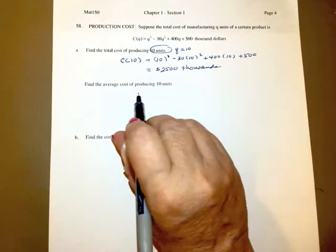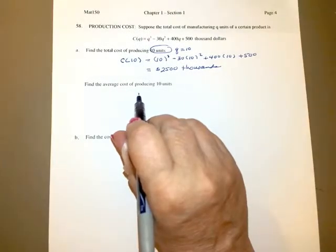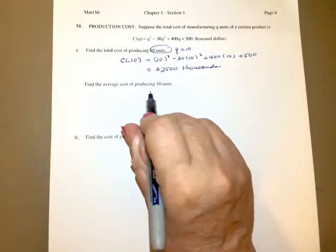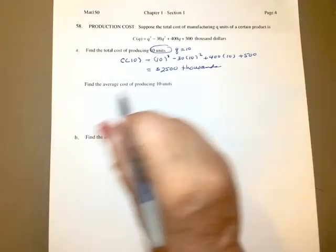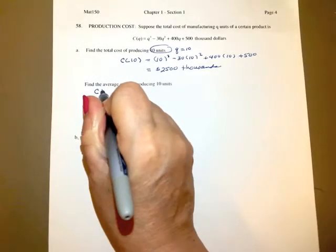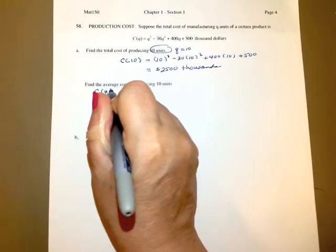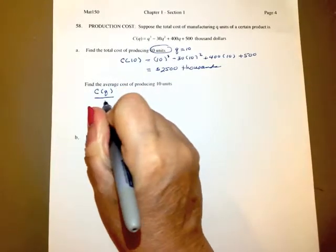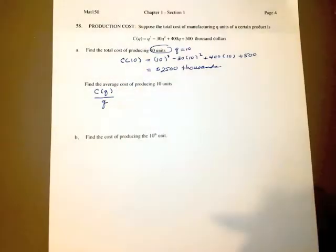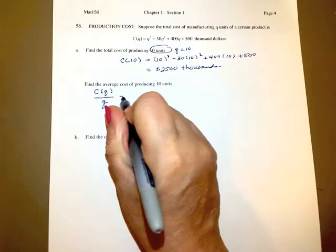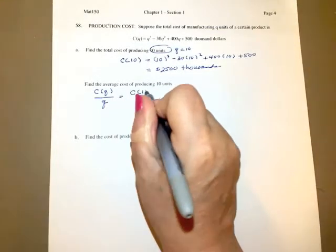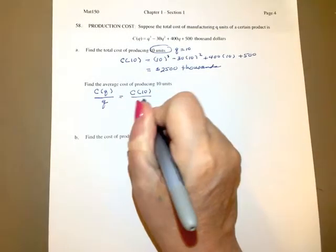Find the average cost of producing 10 units. Now, average cost is going to be the cost divided by the number of units. So what this ends up being is the cost of producing 10 units divided by 10.